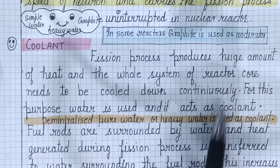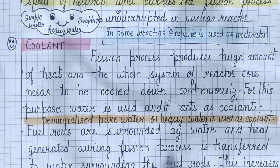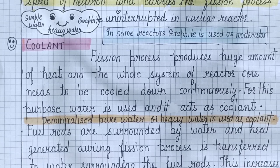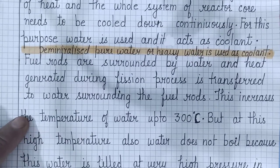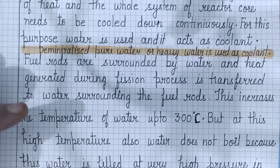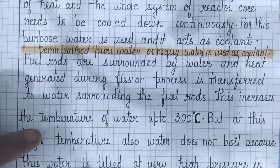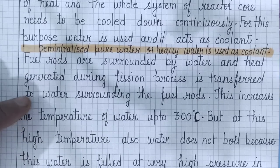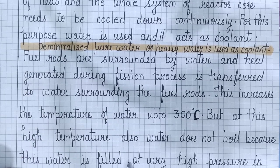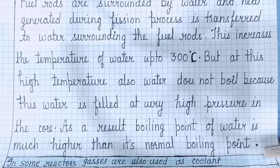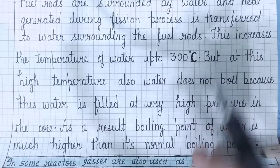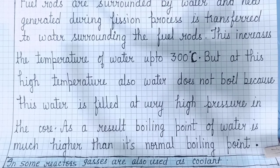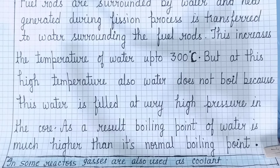The fuel rods are surrounded by water. Heat generated during the fission process is transferred to the water surrounding the fuel rods, which increases the temperature of the water up to 300 degrees Celsius. But at this high temperature, the water does not boil because it is filled at very high pressure, so its boiling point is much higher than normal.